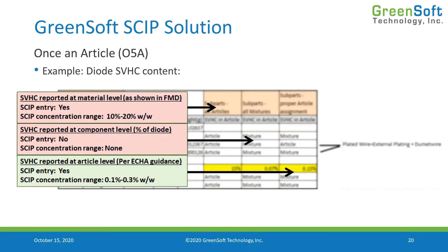Once we look at the parameters, doing it wrong means we would either be reporting a 10 to 20% range when we should be reporting 0.1 to 0.3%, or we're not reporting at all — which means we're not meeting our legal obligations. The idea that we don't have to follow the guidance, that we can gloss over it and just report worst case, falls apart in the context of SKIP. Suppliers have in many cases been doing this incorrectly — either taking the lazy approach or reporting at the component level — both of which are wrong.